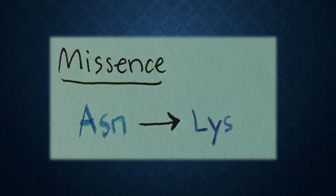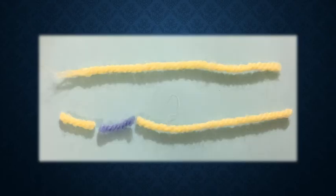Another way we can look at this example is through a yarn string. The top string represents a normal strand and the bottom represents a mutant strand. The change in color of the bottom string represents the change of the amino acid from the missense point mutation, and everything else stays the same.